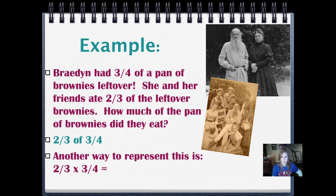Brayden had three-fourths of a pan of brownies left over. She and her friends ate two-thirds of the leftover brownies. How much of the pan of brownies did they eat? So we know that when we are reading a word problem like this, we have to rephrase it. So they ate two-thirds of three-fourths. And any time we see the word of, we can put a multiplication symbol in place of it. So we can represent this as two-thirds times three-fourths.